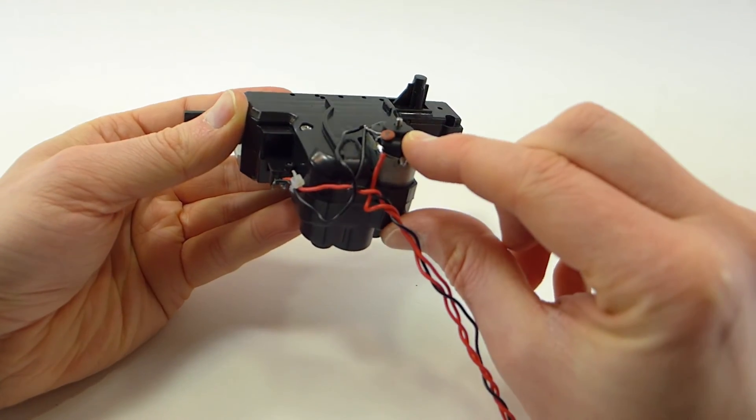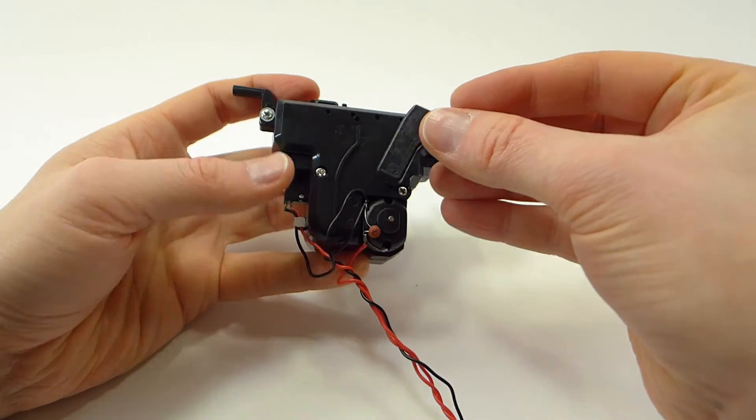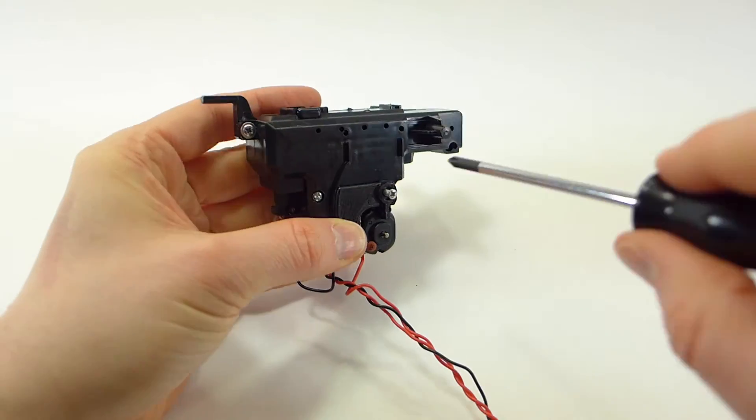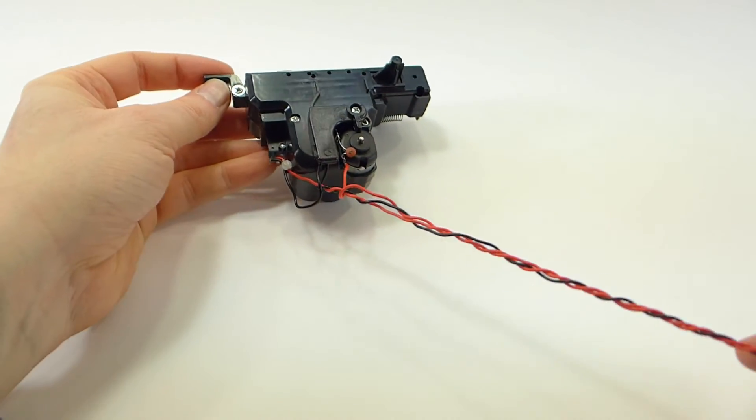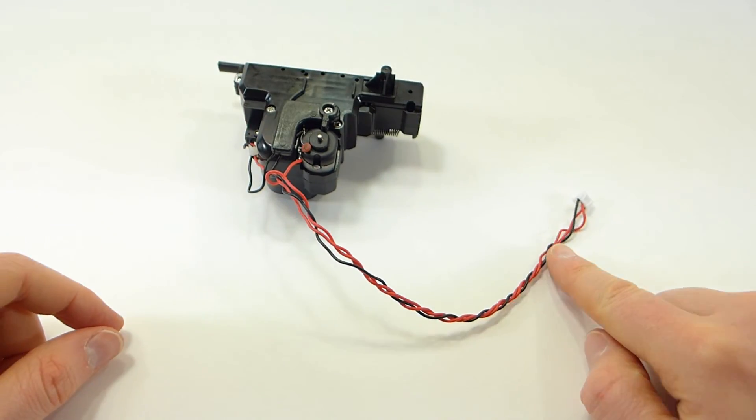Now we're going to push the motor back down and then we can reattach the little cover. And that's it, we're all done. We've modified our airsoft unit.